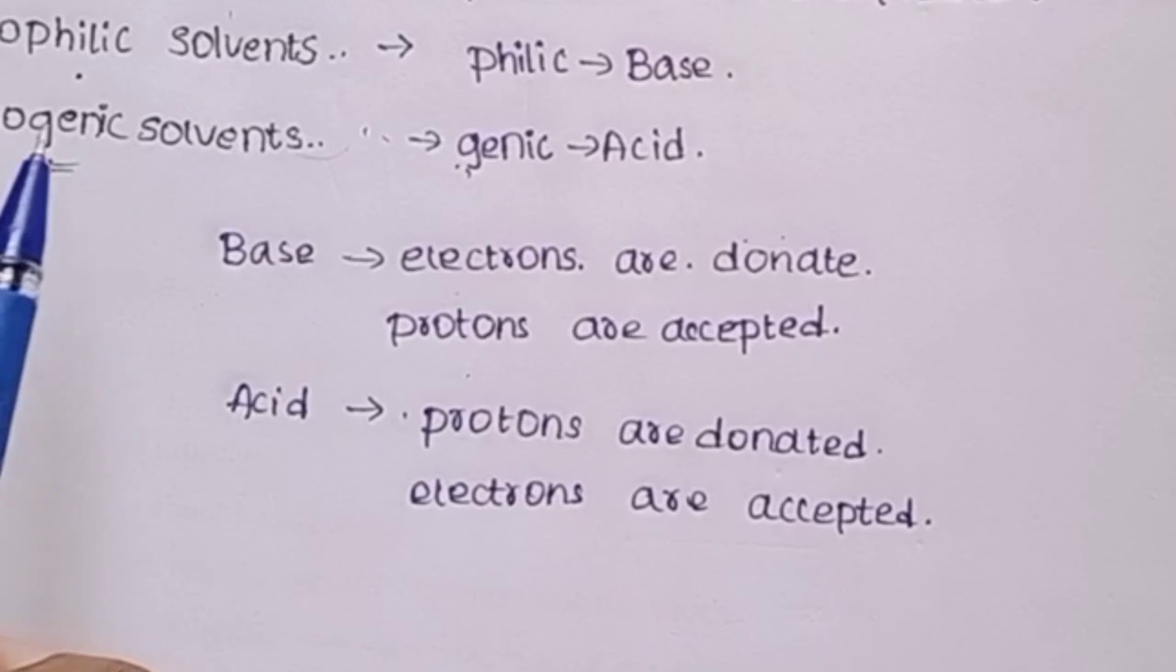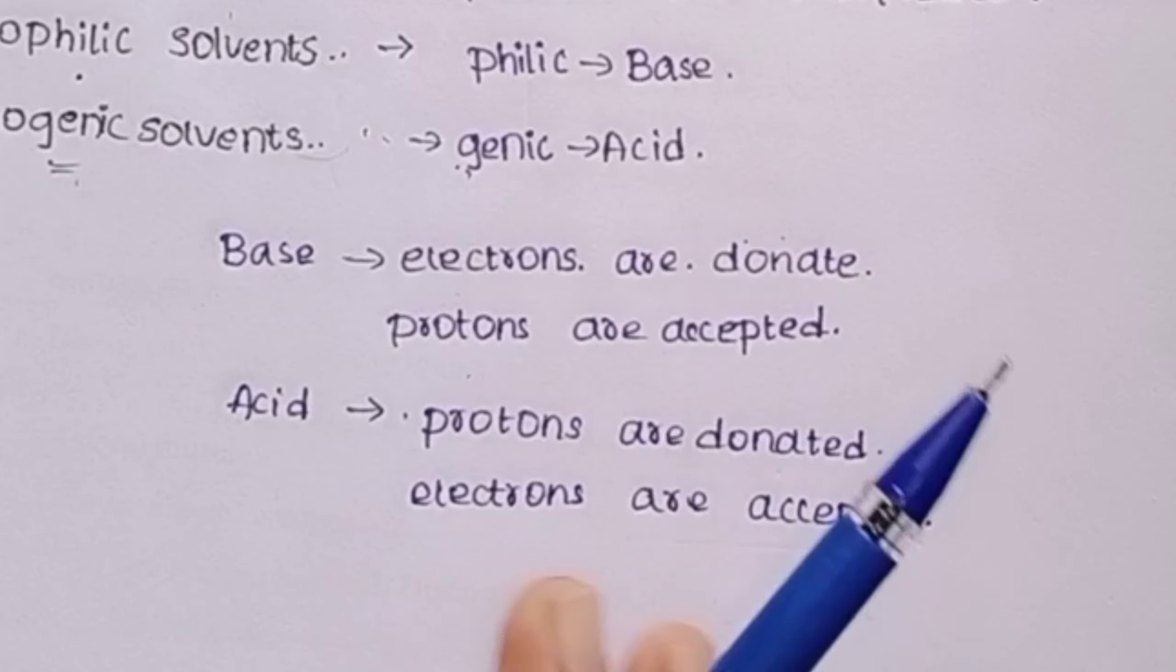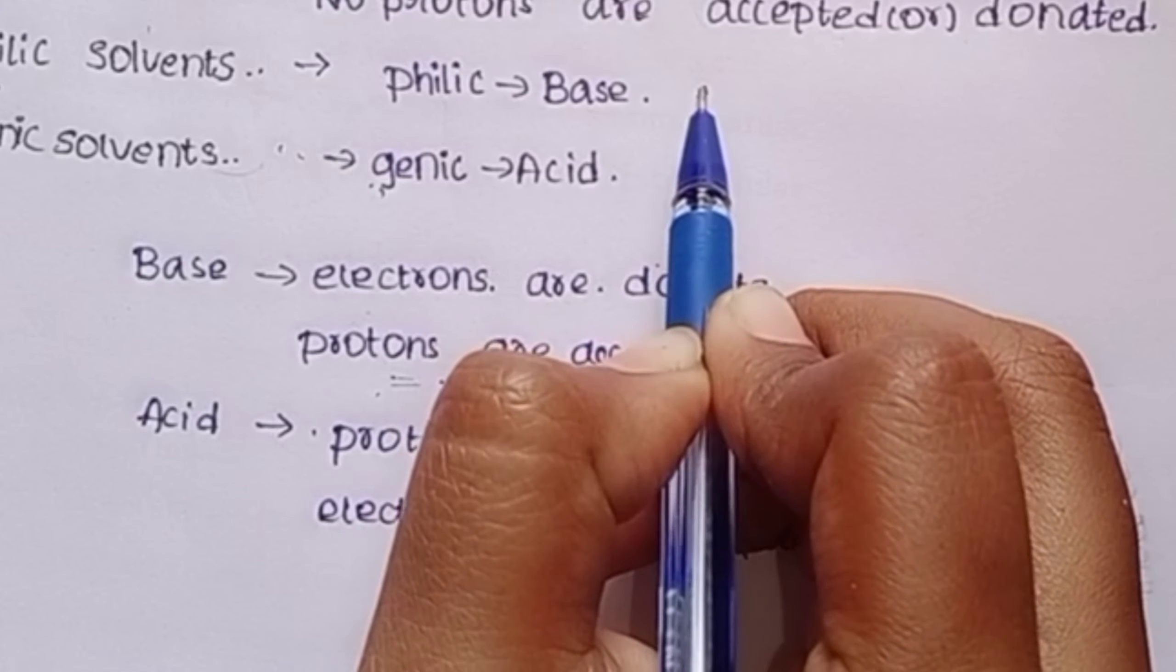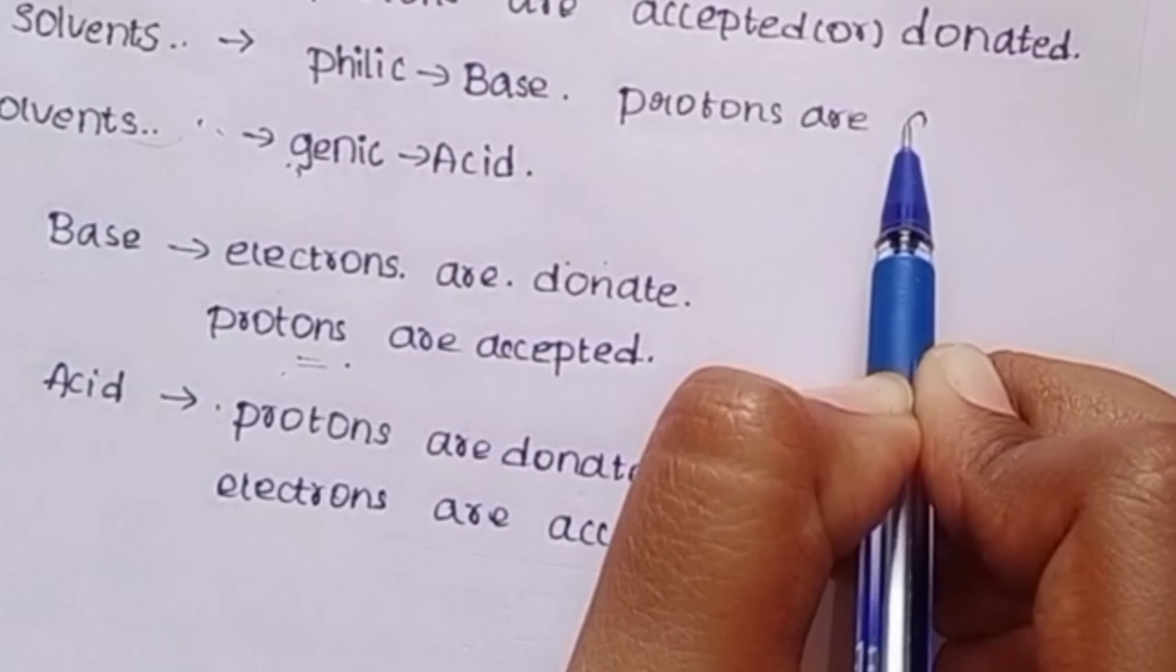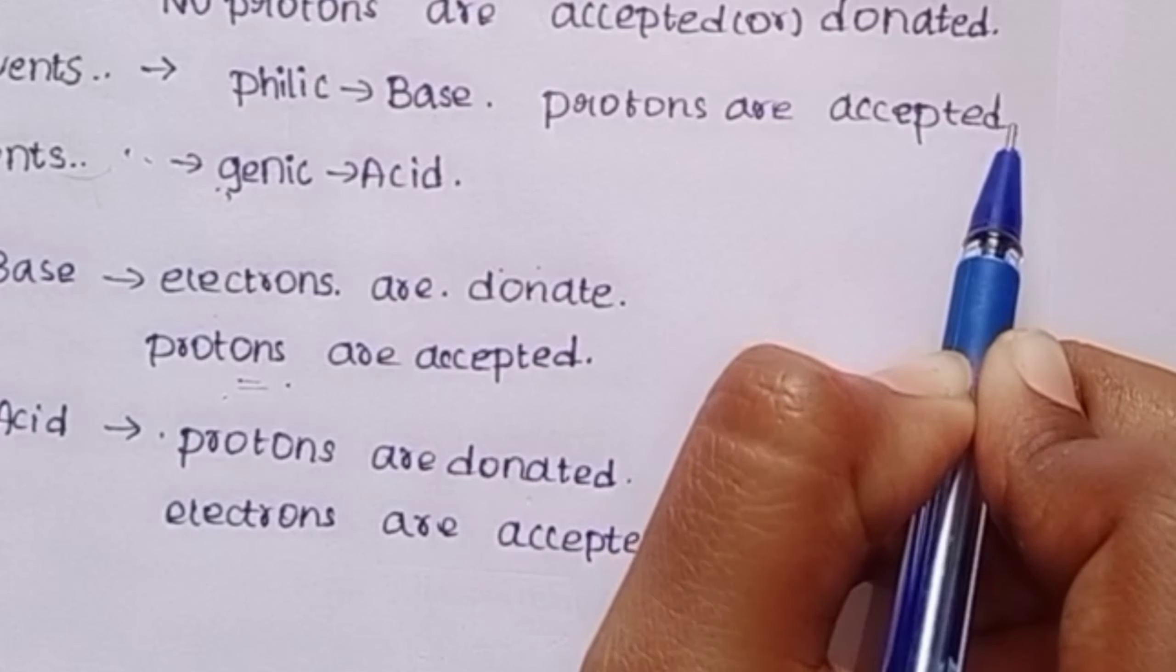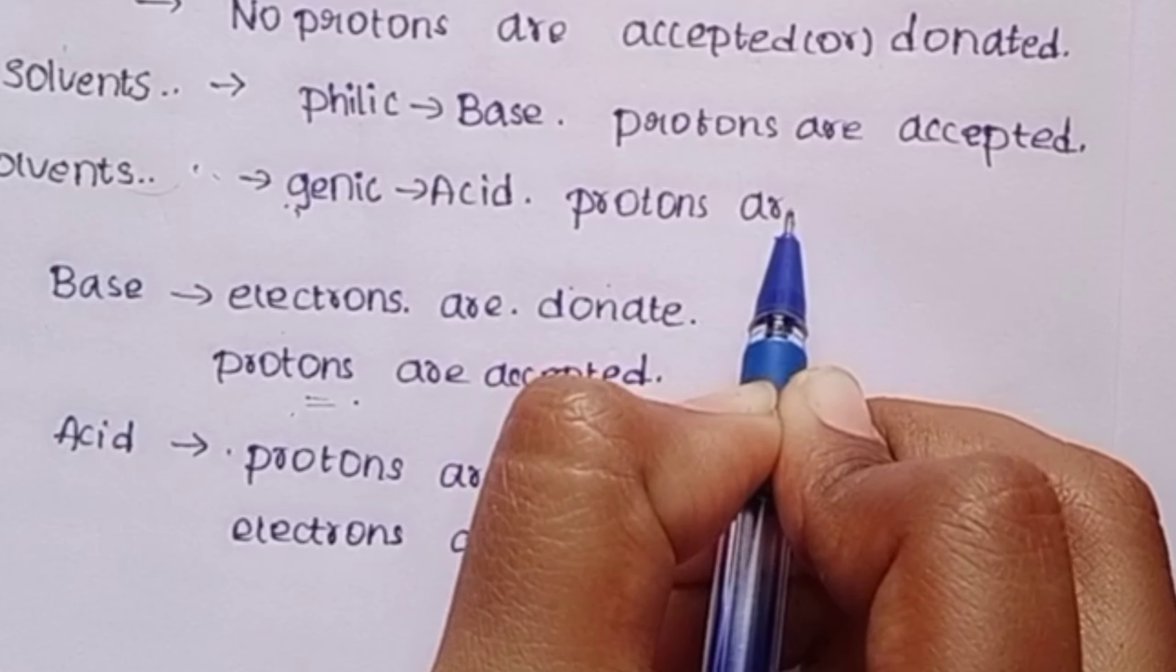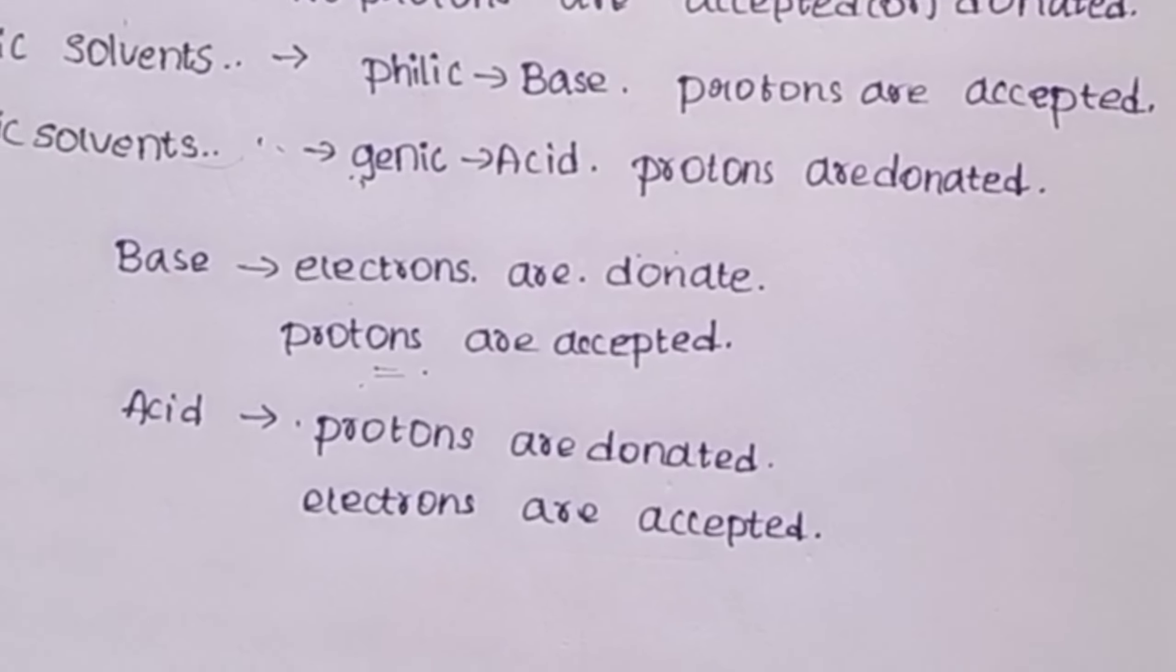This is most important. I told you, protophilic, philic means base, genic means acid, easy to remember. Base means protons are accepted. This is accepting of protons, base. Protogenic means protons are donated.